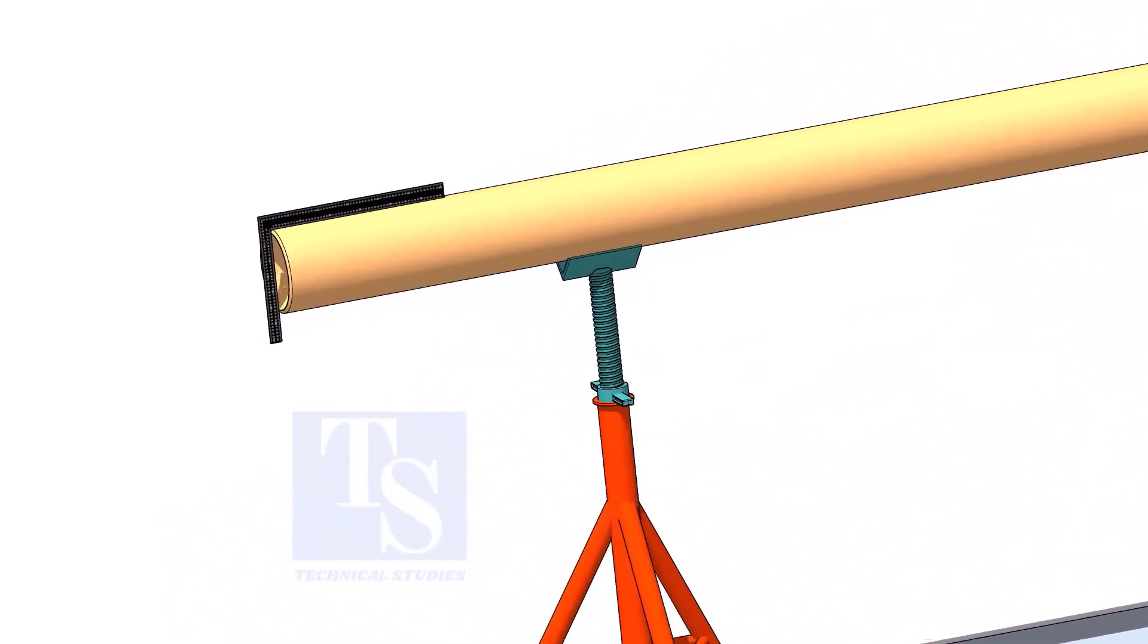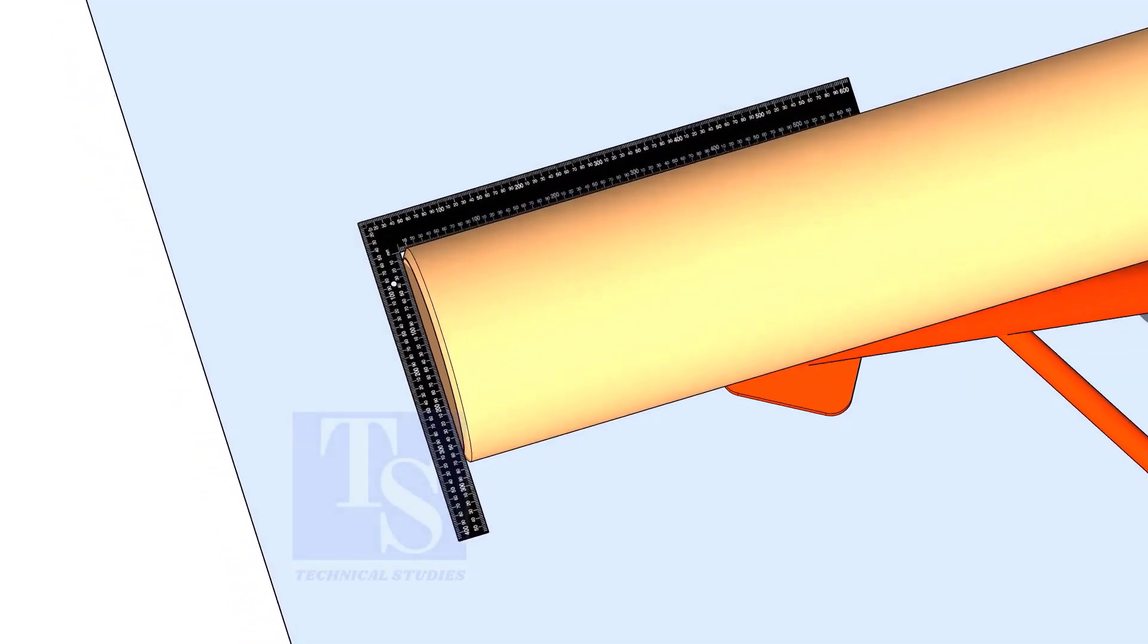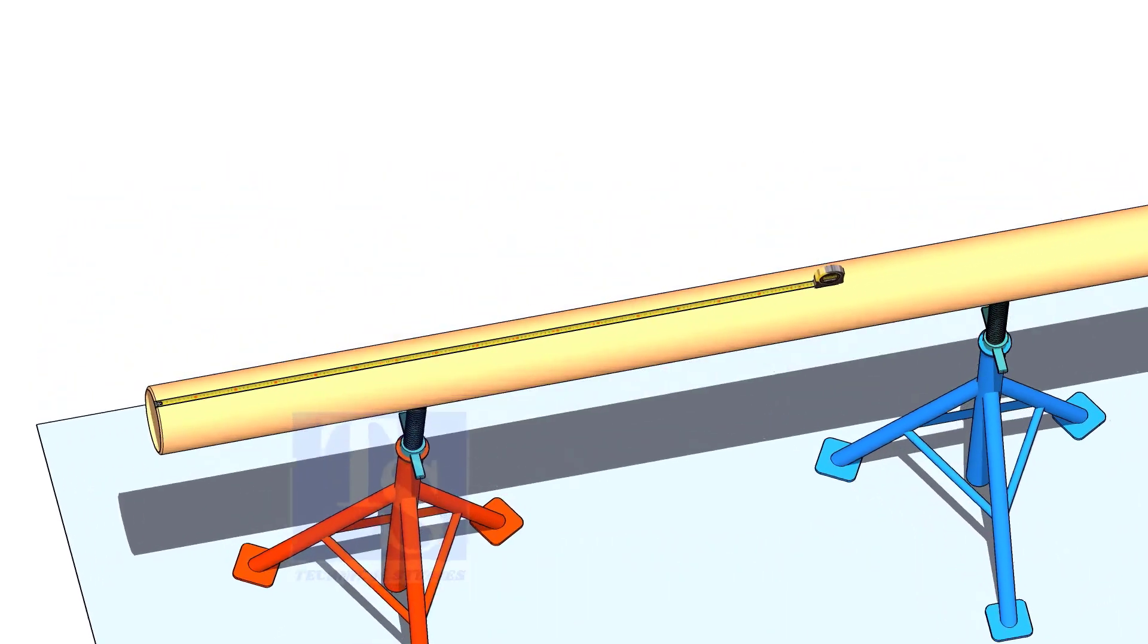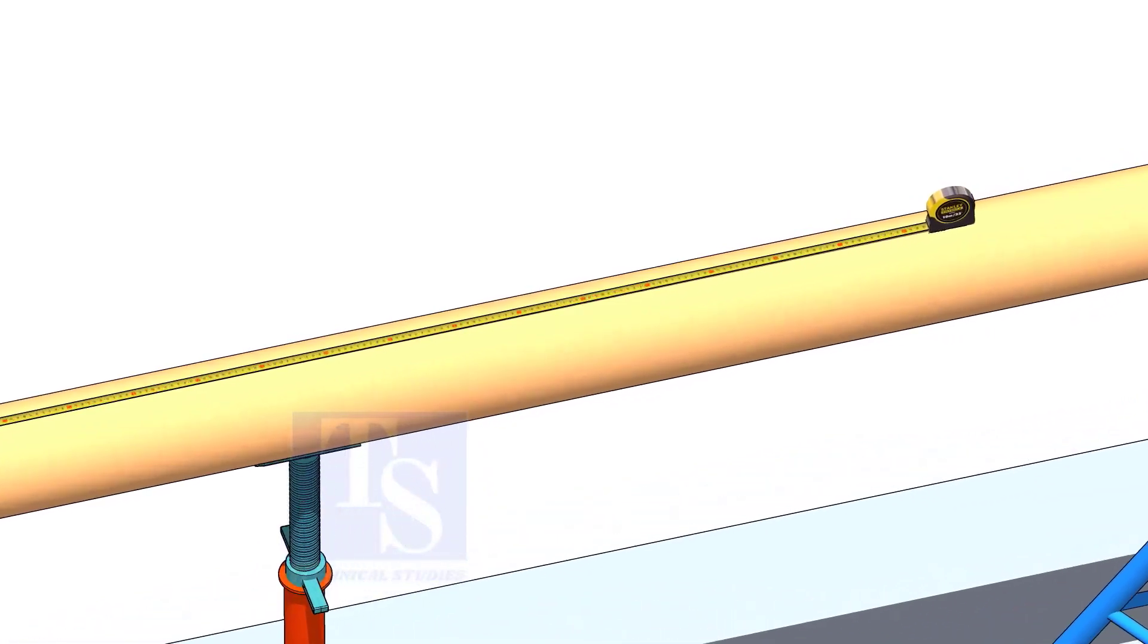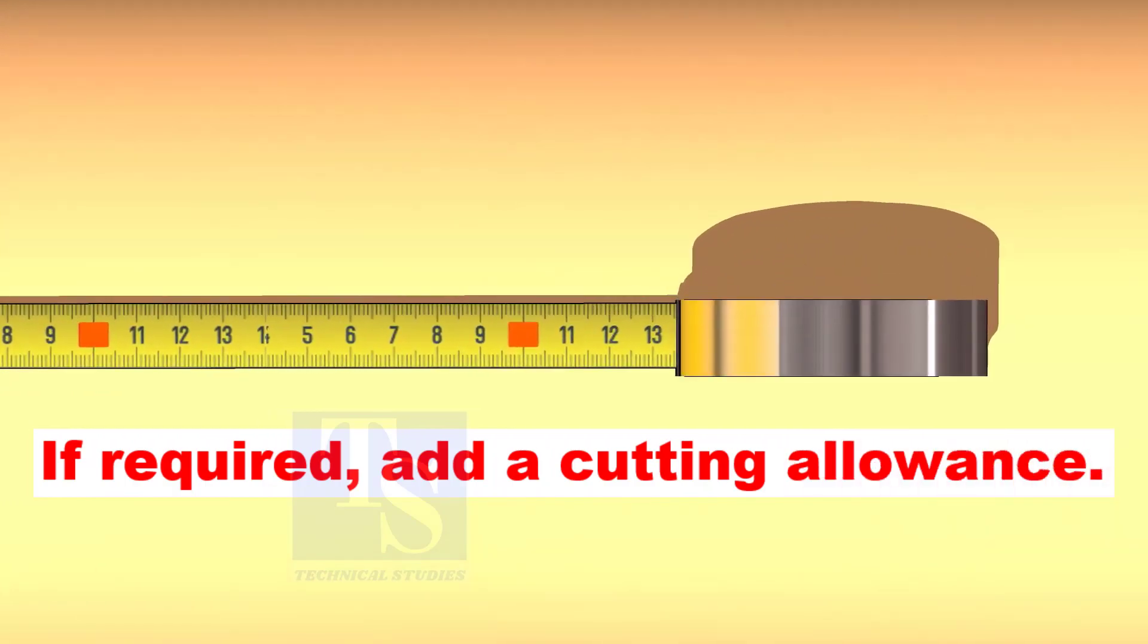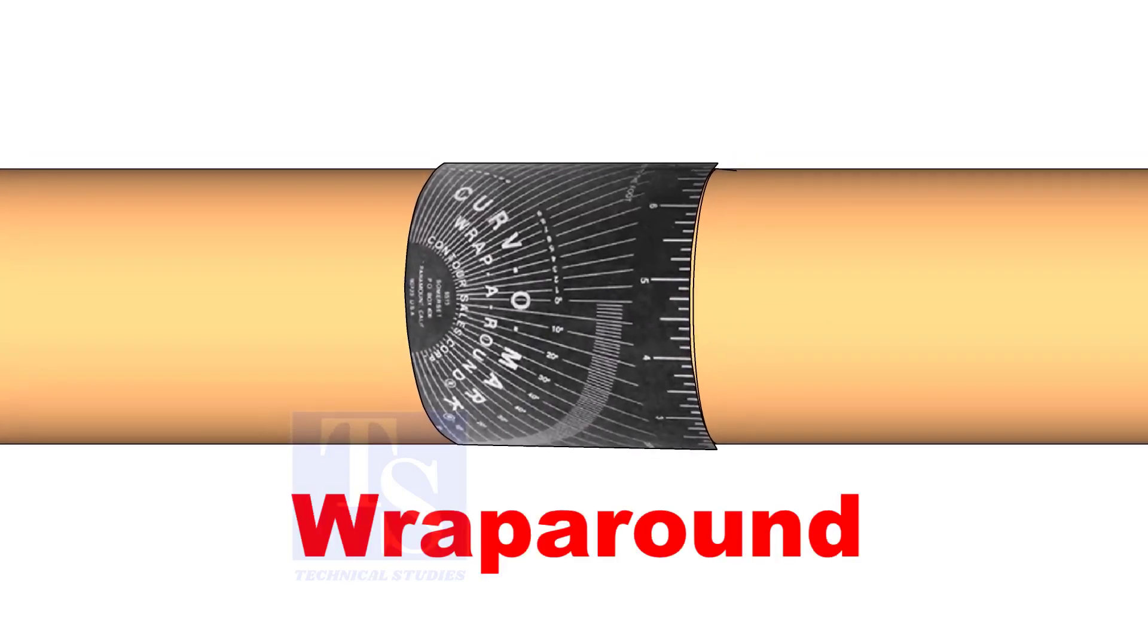Most of the time, the new pipe ends are machine beveled. But for good fabrication practice, check the squareness of the pipe before marking the length. Mark the required length of the pipe and, if required, add cutting allowance. Use a wrap-around to draw the circular line.